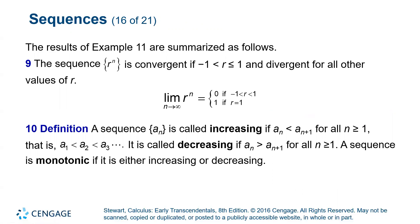So to put all of that information together, we have that the limit of R to the N is zero when R is between negative one and one and one if R equals one. And this is where this limit or this sequence is convergent. Everywhere else it's not listed here, we found that the sequence is divergent.